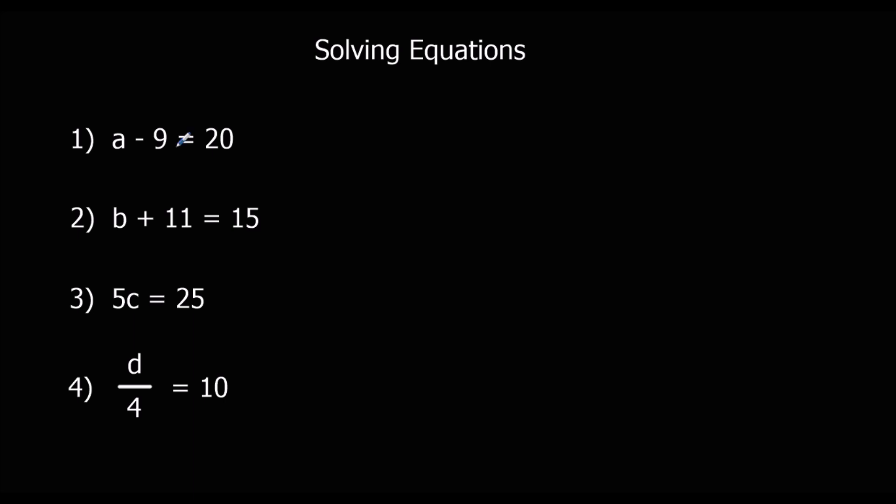Okay, firstly we had a minus 9 is equal to 20, so a was 29. 29 minus 9 equals 20. b plus 11 equals 15. b is 4 because 4 plus 11 equals 15.